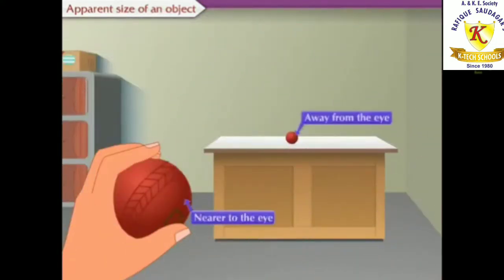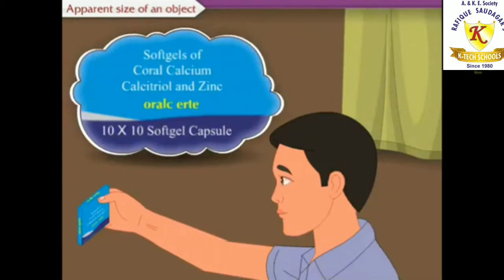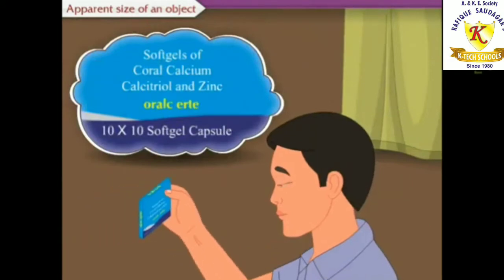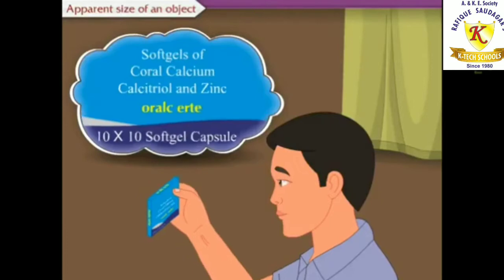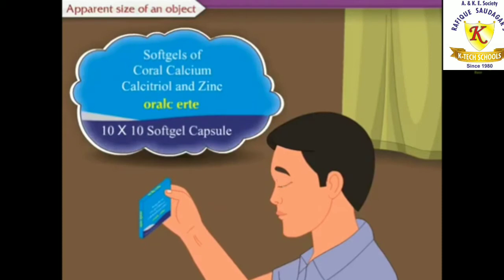Now if the object is nearer to the eye, the angle is greater and its observed size is also greater. In order to see the object distinctly, we bring the object nearer to the eye. However, if the object is brought within the distance of distinct vision, we cannot see it clearly due to the strain on the eye, even though it sustains a large angle at the eye.